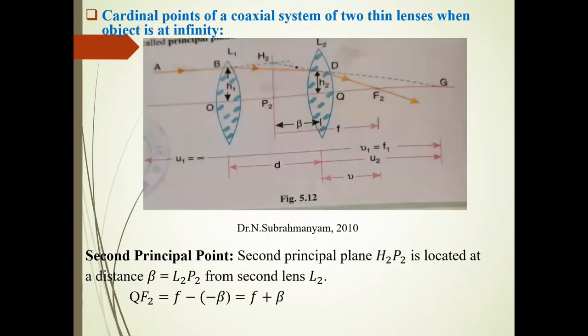So friends, see in this diagram, lens L1, lens L2, these two lenses form coaxial lens system. And see, Ray AB, after refraction through this lens L2, follows the path along DF2.